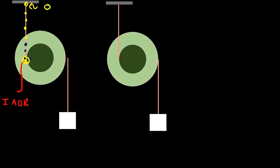Now let's go to the dynamics part. I'll draw the free body diagram of the pulley: its weight capital Mg acts downward, and the two string tensions are T1 and T2. On block A, the tension acting upward is T2 and its weight is small mg downward.